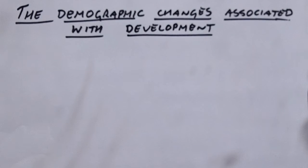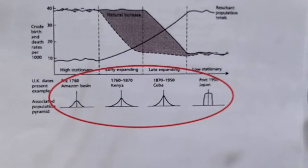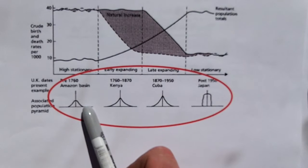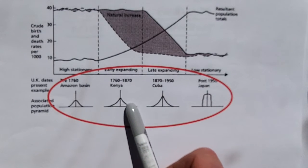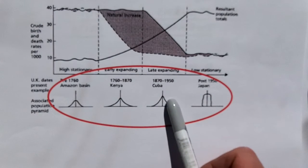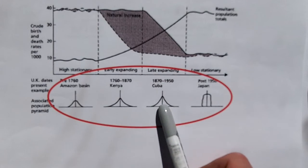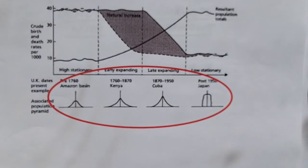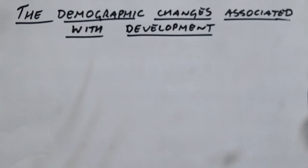As well as having the demographic transition model, you've also got population pyramids. You can clearly see how as a country develops the top of the pyramid gets wider as people start to live longer, and the bottom of the pyramid starts to narrow, meaning people are having fewer children. So that's some of the basics.